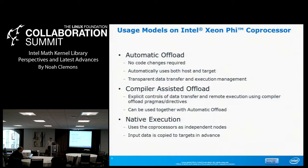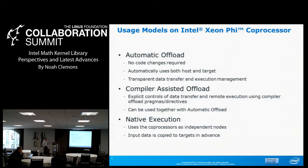The three usage models: automatic offload is truly automatic — you don't have to change any MKL call at all. It automatically uses both host and target, transparently sends data to the card, and manages execution. However, if you know better, we have controls in the API you can use to change that. Compiler-assisted offload is where you're explicitly controlling when and how data is transferred and controlling the remote execution, using compiler offload pragmas and directives. We've got some code snippets today to show how to do that.